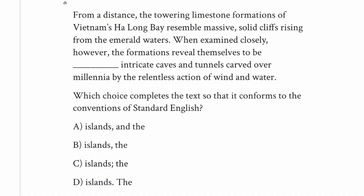It's not as common, but we can also see the reverse pattern. Glancing at the answer choices, we've got the period, the semicolon, and the comma plus conjunction — meaning three options with hard punctuation and just one without it. That's a clue we want to take a good look at B. Reading the passage: 'From a distance, the towering limestone formations of Vietnam's Ha Long Bay resemble massive solid cliffs rising from the emerald waters. When examined closely, however, the formations reveal themselves to be islands — blank — intricate caves and tunnels carved over millennia by the relentless action of wind and water.'